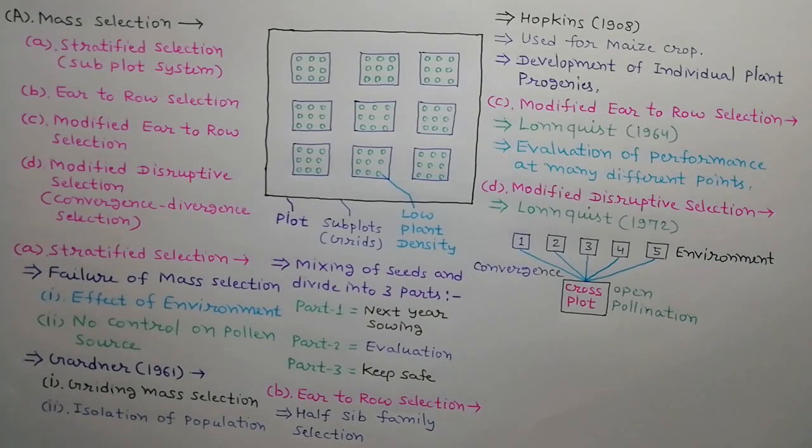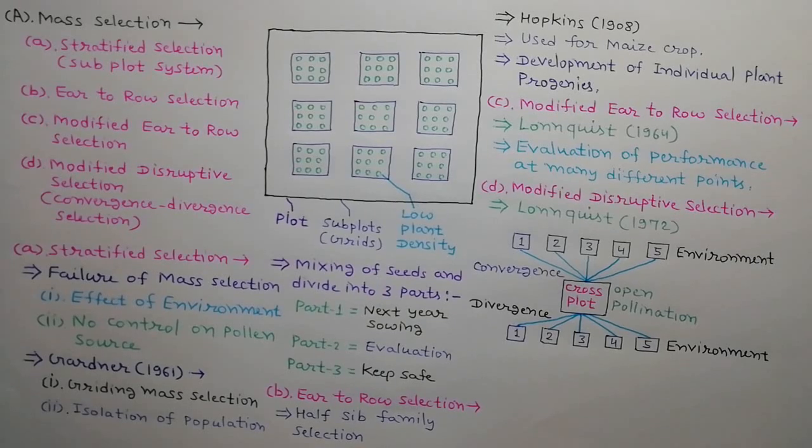Next year, take equal amount of seeds from five places and grow them in a crossed plot. This is called convergence. Allow open pollination and collect their seeds. Now, take five parts of equal number of seeds from crossed plots and grow at five different places or environments. This is called divergence. Select superior plants at each place and their seeds are collected.